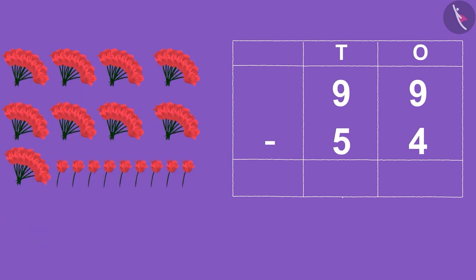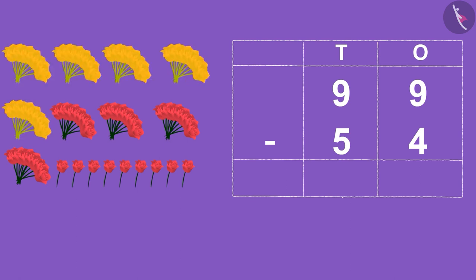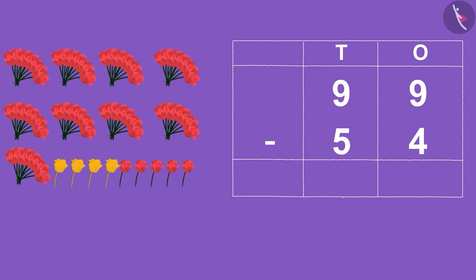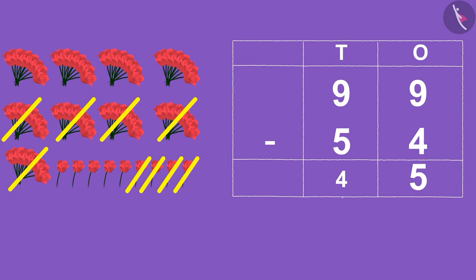99, that is 9 stacks of 10 flowers and 9 open flowers. We have to subtract 54 from 99, the number of rotten flowers. Minus 54, that is 5 stacks of 50 flowers and 4 open flowers. 9 minus 4 is 5 and 9 minus 5 is 4.